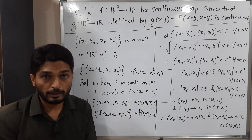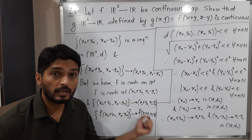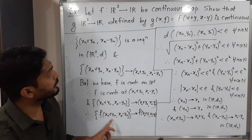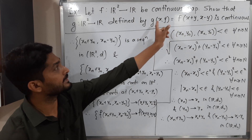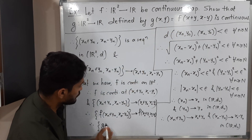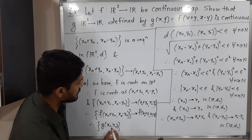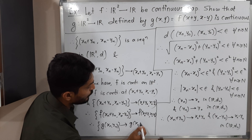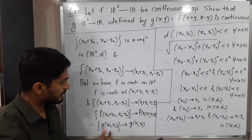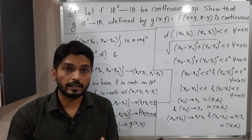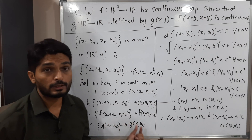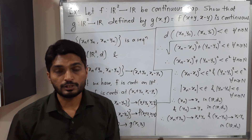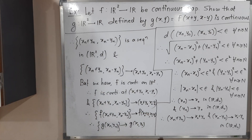If a function is continuous at a particular point and you have a convergent sequence converging to that same point, the image sequence converges to the image of that point. Notice that f(xₙ+yₙ, xₙ−yₙ) is nothing but g(xₙ, yₙ) by definition of g, and f(x₀+y₀, x₀−y₀) is nothing but g(x₀, y₀). Therefore g(xₙ,yₙ) converges to g(x₀, y₀).